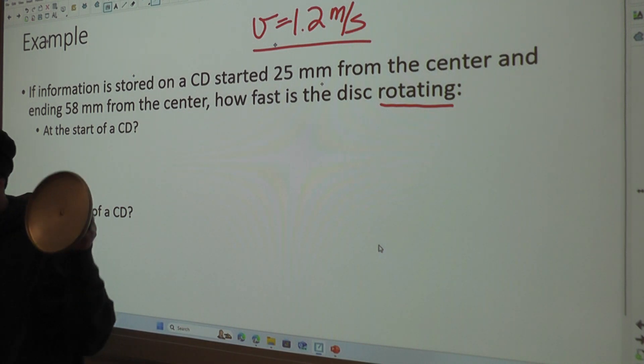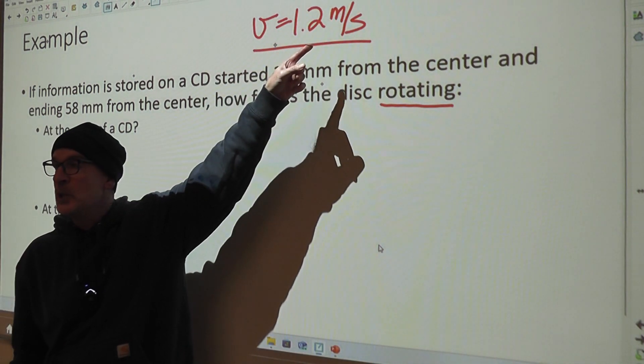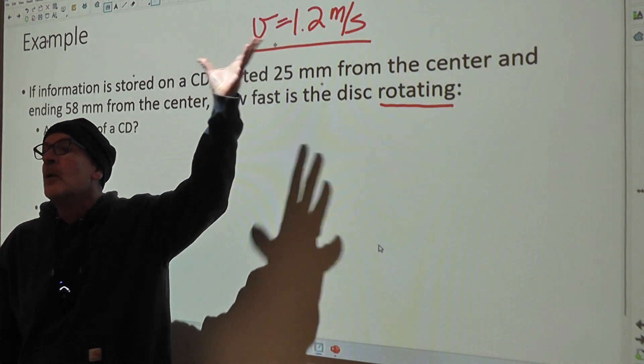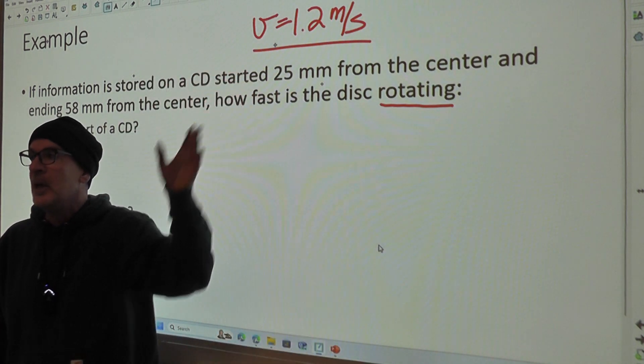Like a CD, when the CD player's off, is looking like this. And then there's some amount of time when it spins up to the point where something is going 1.2 meters per second. We don't have to worry about that. We're going to just assume that that's already happened.